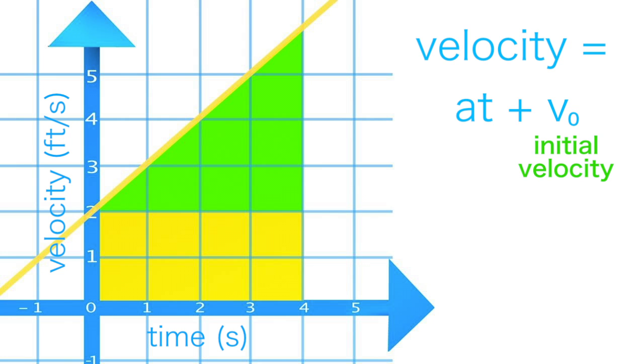The rectangle has a base equal to time passed and a height equal to the initial velocity. So its area is initial velocity times time. The area of the triangle above is just as we calculated before. It's one-half times acceleration times time squared.